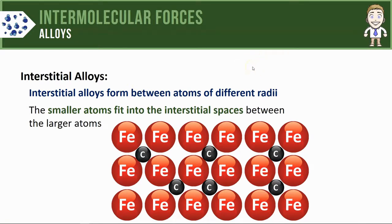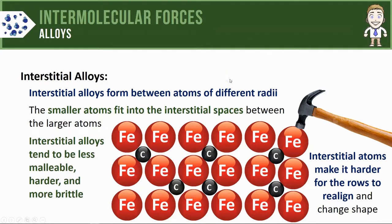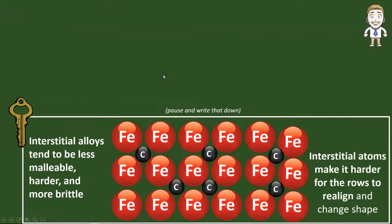If I bring back my hammer and apply some pressure to one of these rows, you can see how the carbon atoms sort of get in the way and make it harder for these rows to realign and change shape. Interstitial alloys tend to be less malleable. It also makes them harder, sometimes more brittle as well.